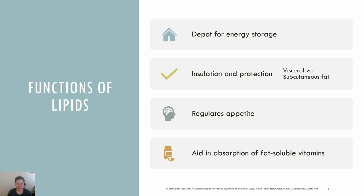Most fats can be synthesized by the body from other macronutrients like carbohydrates and proteins. Lipids are an important depot for energy storage. They offer insulation and protection and also help to regulate hormones. Lipids can serve as a larger and more long-term energy reserve as fats can be packed tightly together without water for a greater amount of energy in a smaller space. Fat cells are able to expand almost indefinitely in size. Some of the fat stored in the body is within the abdominal cavity, and this is called visceral fat.